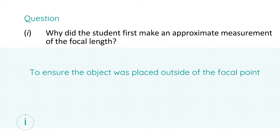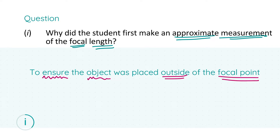Part one asks why did the student first make an approximate measurement of the focal length — this is a crucial point in the experiment. The answer is that we need to ensure that the object was placed outside of the focal point. This sentence will get you your six marks. We need a real image to be formed; if the object is inside the focal point we get a virtual image, which we can't detect on a screen, and therefore we wouldn't be able to determine the focal length of the concave mirror.